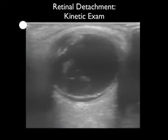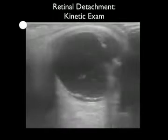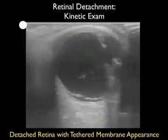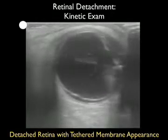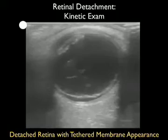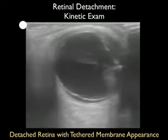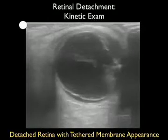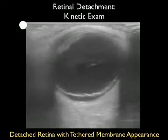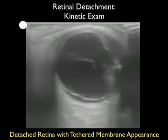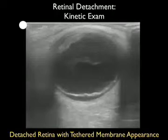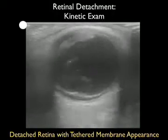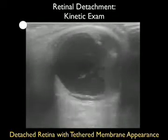Now let's look at retinal detachment using the kinetic ultrasound examination. We have the patient look from side to side with the probe over the closed eyelid, and we note a very large posterior detachment of the retina. It has a tethered membrane appearance as the patient looks from side to side. There is some anterior vitreous material that swirls around, but focus on the posterior membrane — that tethered membrane moving back and forth is the classic kinetic exam appearance of a detached retina.